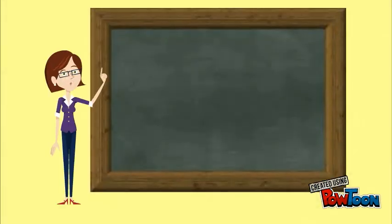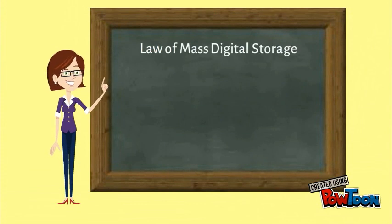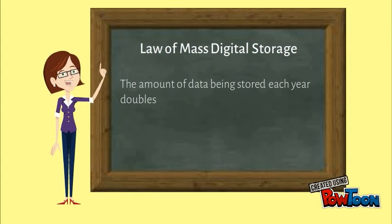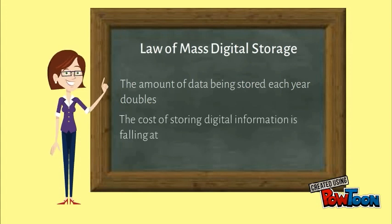Based on the law of mass digital storage, the amount of data being stored each year doubles. The cost of storing digital information is falling at an exponential rate of 100% a year.